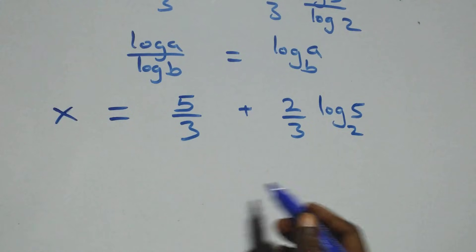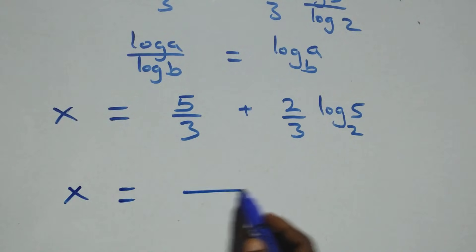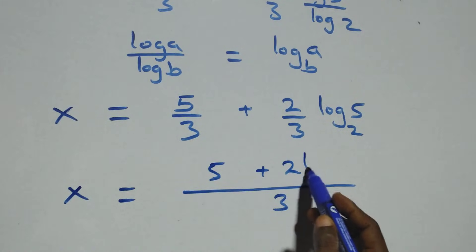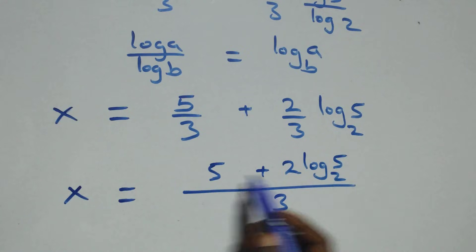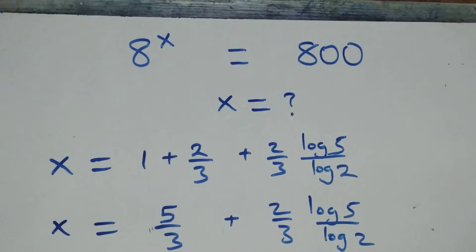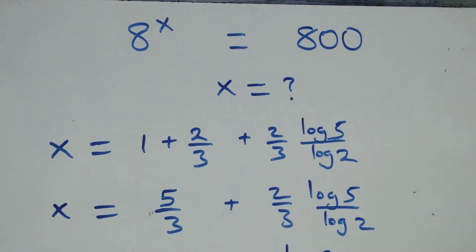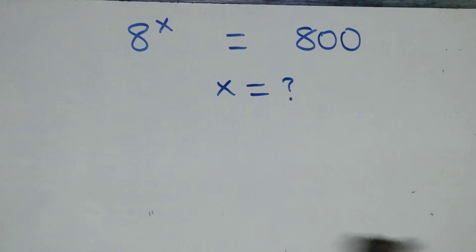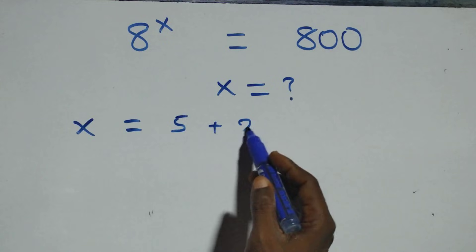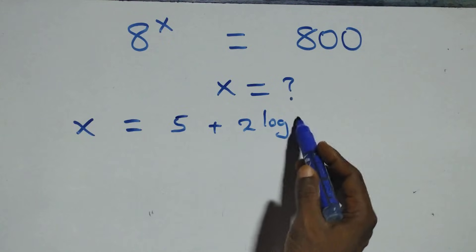Then we bring this together as one fraction, giving x equals to (5 + 2 log₂5) all over 3. That is the value of x: x equals to (5 + 2 log₂5) / 3.